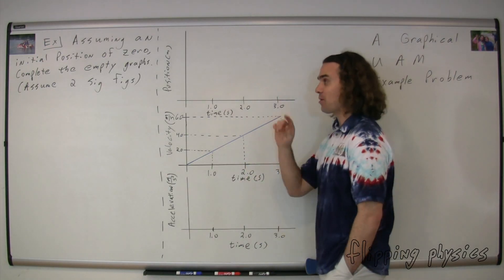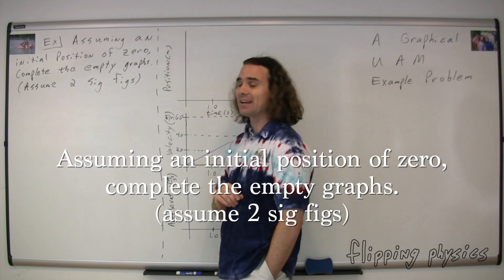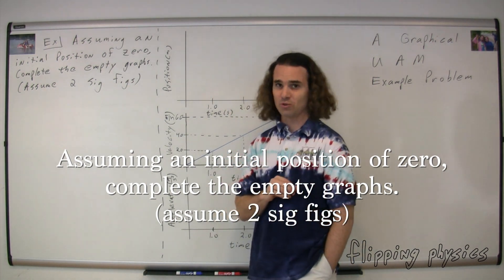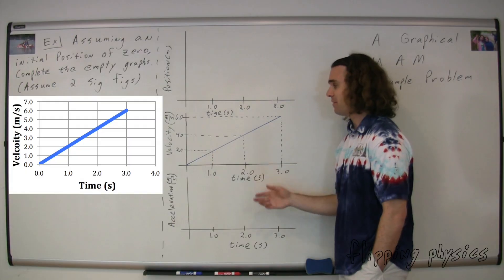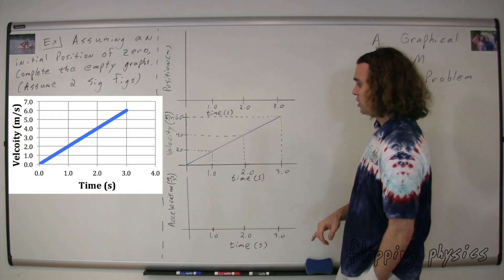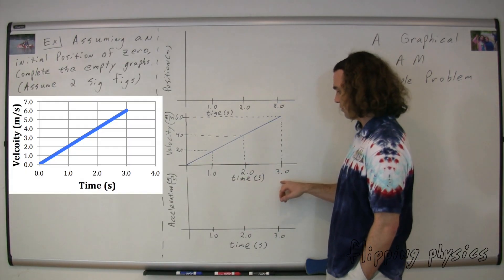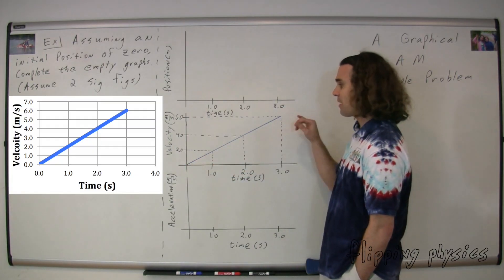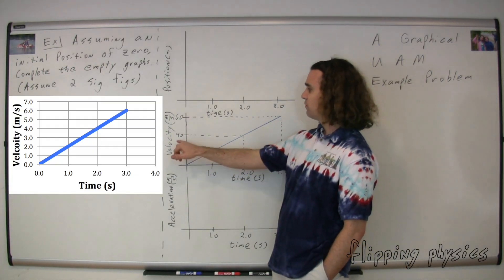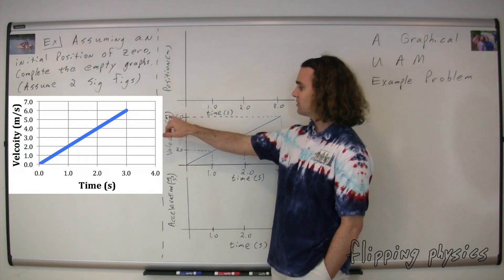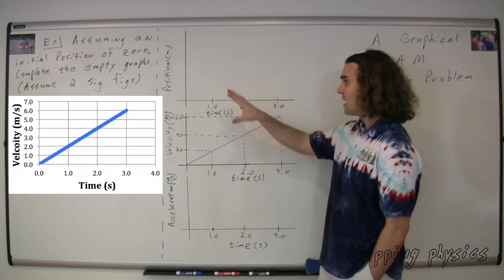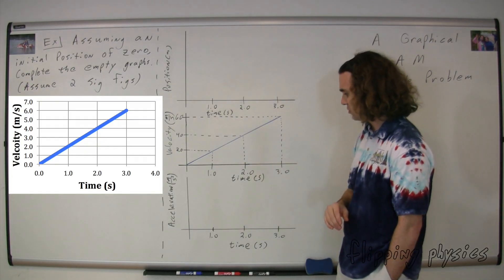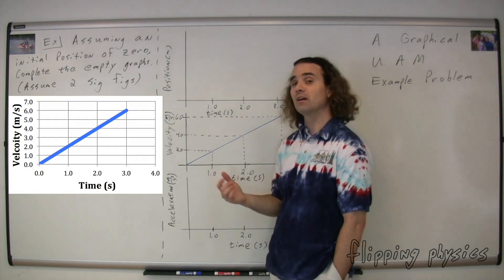Mr. P.: Today we have a problem. The problem specifically states: assuming an initial position of zero, complete the empty graphs — you may assume two sig figs. We have a velocity as a function of time graph with one, two, and three seconds on all time graphs. The blue line represents the motion, and we have two, four, and six meters per second for our velocities. We have two empty graphs — a position and an acceleration graph — and our goal is to fill in those graphs.